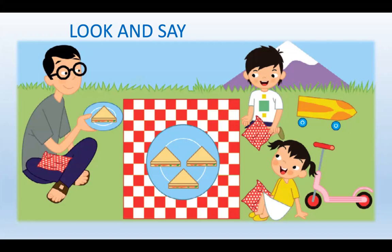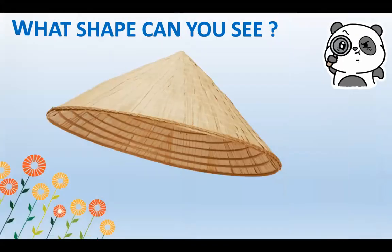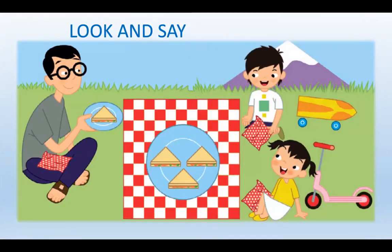What is it? It's a sandwich. What shape is it? It's a triangle. Well done! There are so many things with the shapes — circles, square, or triangle — around us.